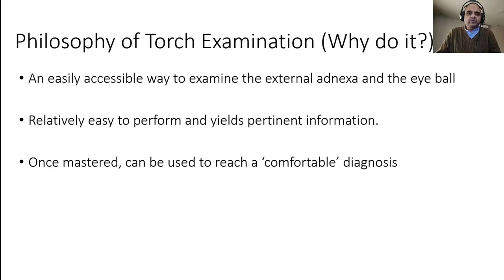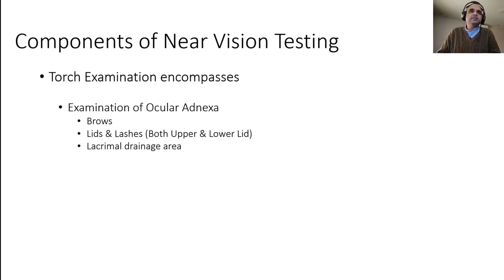It's not a difficult assessment, but as covered in the introduction to clinical skills videos, the most important thing to remember is: your eyes will never see what your mind doesn't know. So if you're not specifically looking for things, your eyes will refuse to see them, even if they are right in front of you. Torch examination basically encompasses examination of the ocular adnexa.